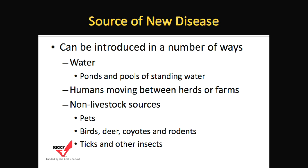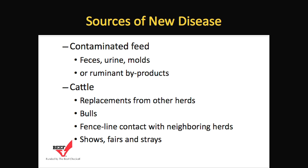A second source is humans and equipment moving between herds or farms. A third is non-livestock sources such as pets, birds, deer, coyotes, rodents, ticks, and other insects. Additionally, disease can be introduced by providing contaminated feed — feeds that are contaminated with feces, urine, mold, or ruminant byproducts would be examples.